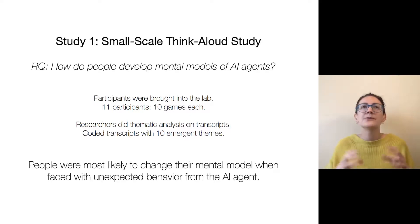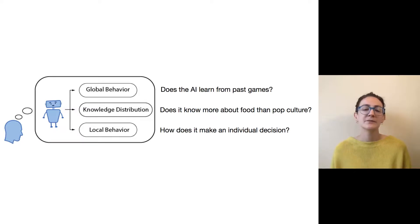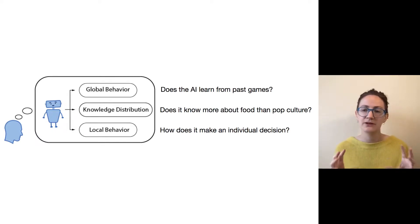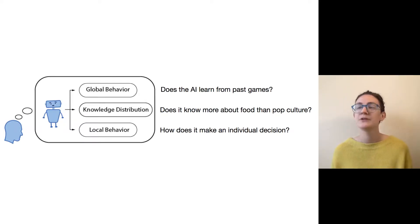The study also produced a framework for how people generally thought about the AI agent, with three main components. First, global behavior — for instance, whether the AI agent was learning from past games and customizing to them personally. Second, knowledge distribution — people were aware the AI agent might know more about food than pop culture, or more about certain places than others. Third, local behavior — how the AI agent made an individual decision, why it gave a single hint. We believe this is a useful framework for many different AI systems, not just our particular one.